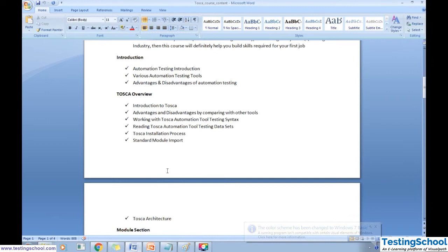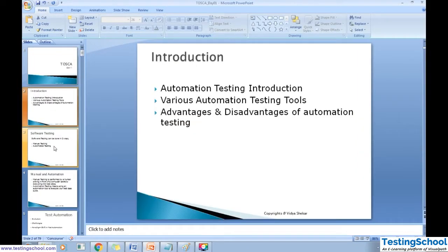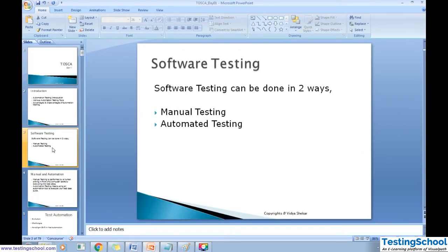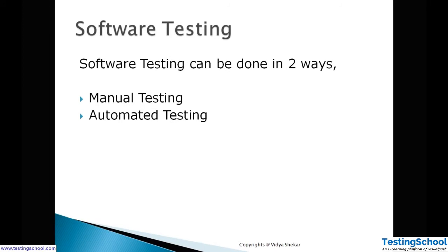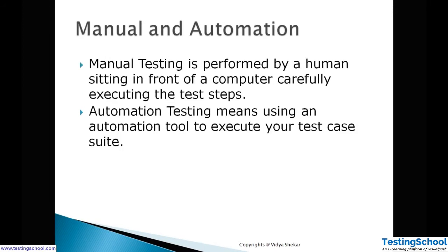Whenever you're testing an application, we test it so that it is a high-quality product that meets customer requirements and is user friendly. In the software industry, testing can be performed in two ways: one is called manual testing and the other is called automation testing.